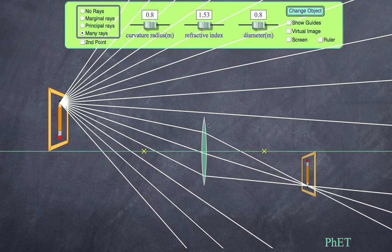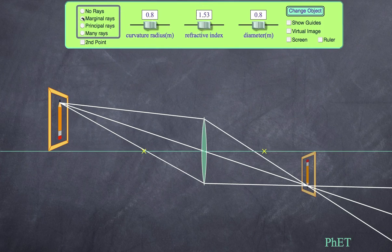In this case we have lots of light rays, but to help us understand what's happening with the image, we can choose marginal rays or principal rays. I'm going to choose marginal rays, which basically takes three samples of light: one light ray passes through the top of the lens, one through the bottom of the lens, and one directly through the middle.